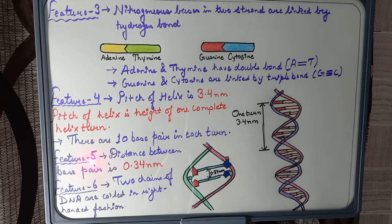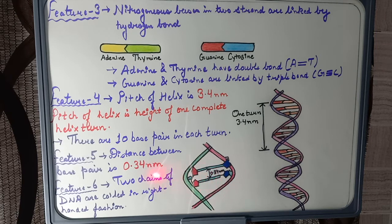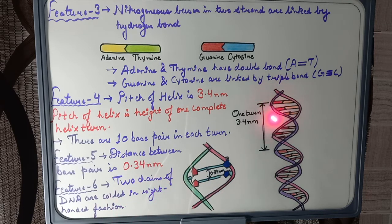According to Feature 5, the distance between two adjacent nitrogenous bases is 0.34 nanometers, as you can see in the diagram. Additionally, the DNA is coiled in a right-handed fashion. These were the features of the DNA double helix model given by Watson and Crick.